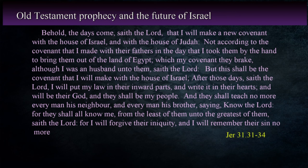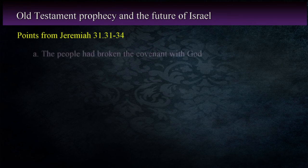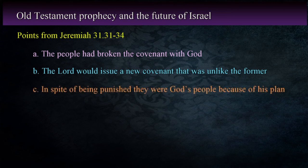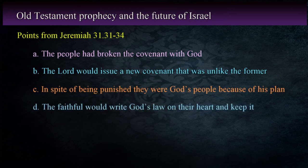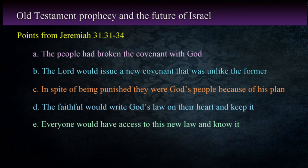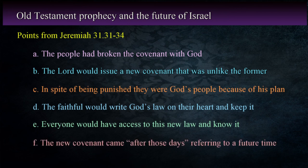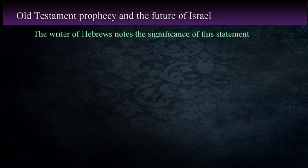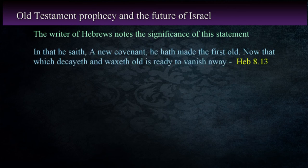There are several points that need to be emphasized from this passage. The people had broken the covenant with God, so the Lord would issue a new covenant that was unlike the former. In spite of being punished, they would be God's people because of his plan. The faithful would write God's law in their heart and keep it. Everyone would have access to this new law and know it, and the new covenant would come after those days, referring to a future time. The writer of Hebrews quotes this passage and adds an additional element that demonstrates its significance: 'In that he saith a new covenant, he hath made the first old. Now that which decayeth and waxeth old is ready to vanish away' — Hebrews 8:13.